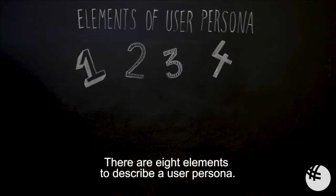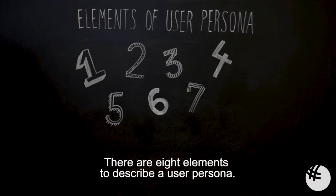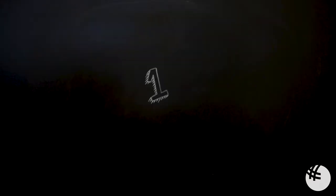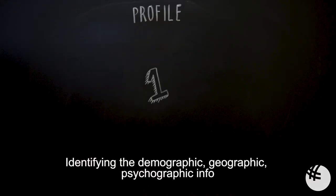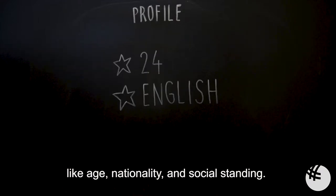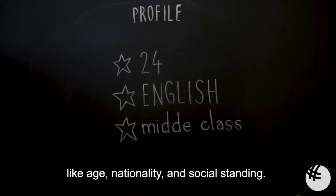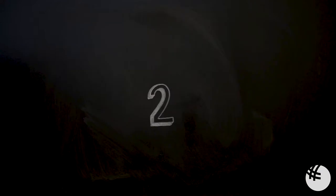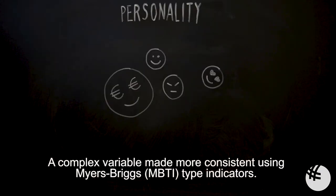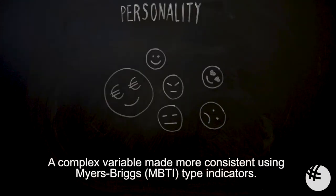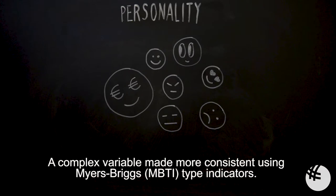There are eight elements to describe a user persona. Profile – identifying the demographic, geographic, and psychographic info like age, nationality, and social standing. Personality – a complex variable made more consistent using Myers-Briggs type indicators.